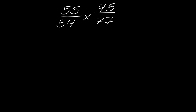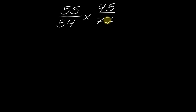Now let's talk about slightly more complicated examples. What if we have a situation where multiplying straight across gives us large numbers — like 55 times 45 and 54 times 77? Those aren't totally straightforward, but notice that 55 and 77 have something in common, and 54 and 45 have something in common. So we can actually reduce before multiplying.